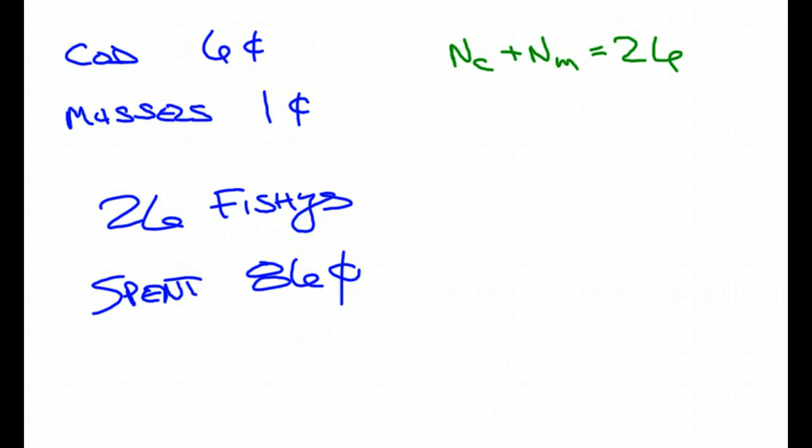Now we're going to go to price. She bought cod fish for six cents, six cents times the number of cod fish, plus one cent times the number of mussels. And that equals 86 cents. And at this point, you use either substitution or elimination, put the things together.